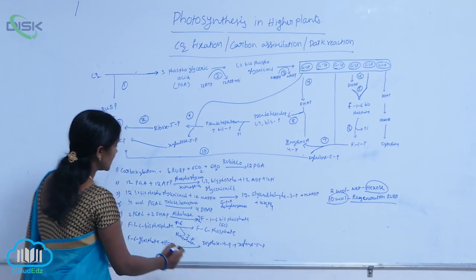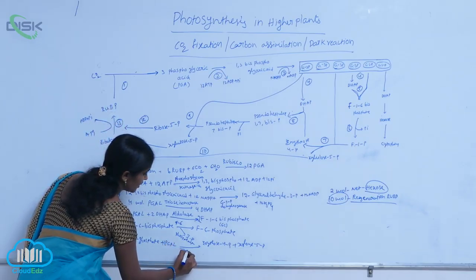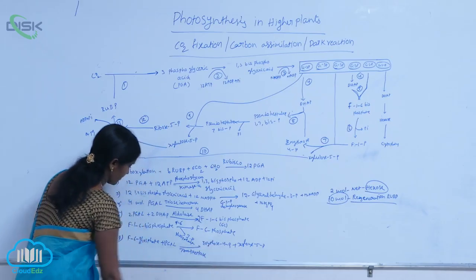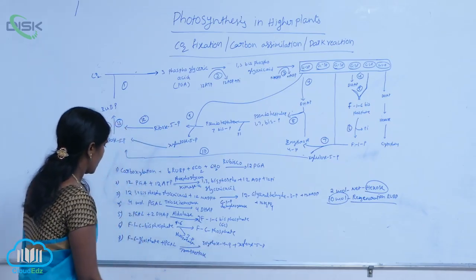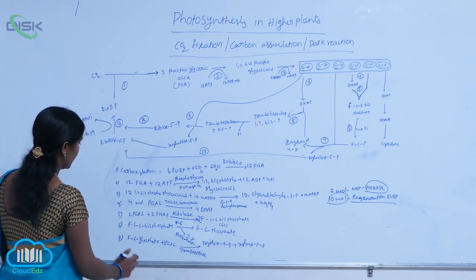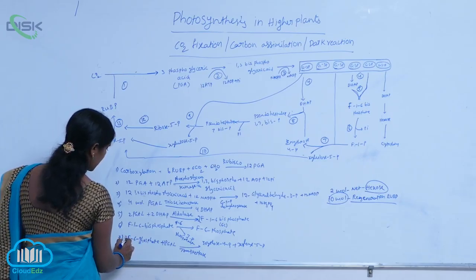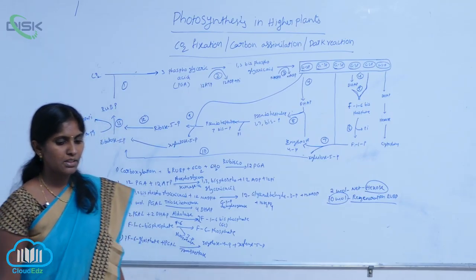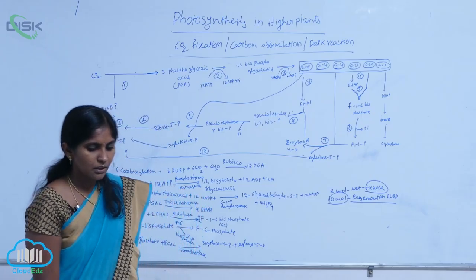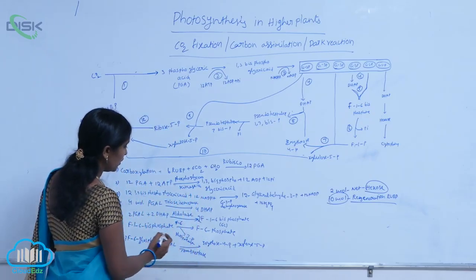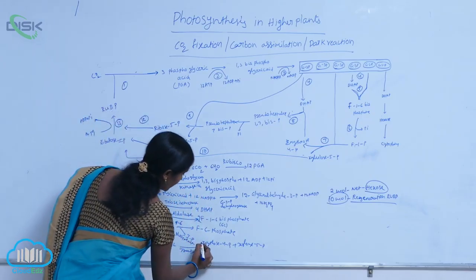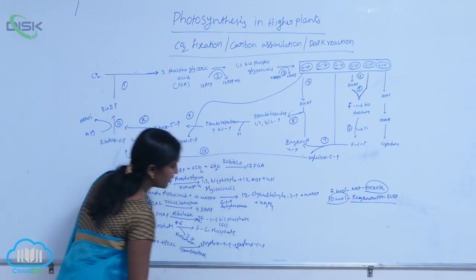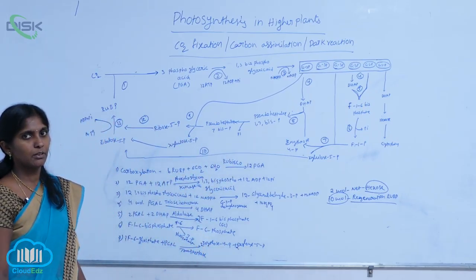transketolase enzyme. 2 molecules of fructose 6-phosphate and 2 molecules of PGA-L resulted in the production of 2 molecules of erythrose 4-phosphate as well as 2 molecules of xylulose 5-phosphate.